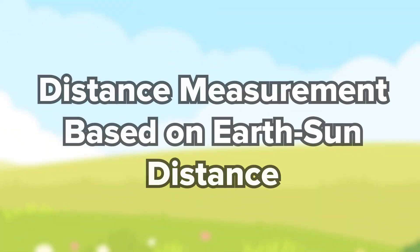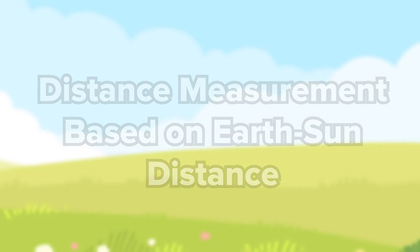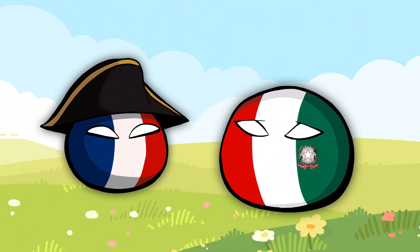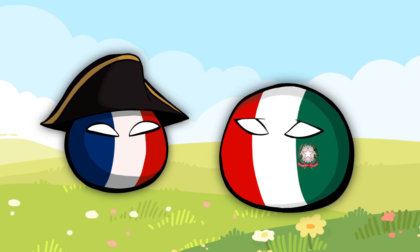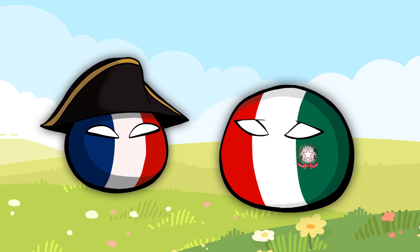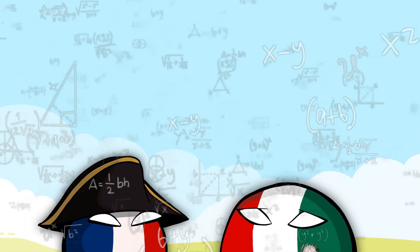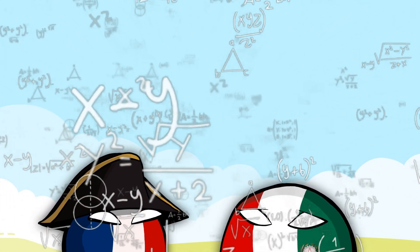We measure distances within our solar system using the astronomical unit (AU), which is based on the average distance between Earth and the Sun—about 149.6 million kilometers.